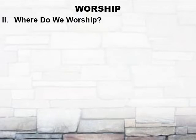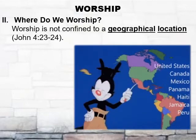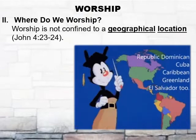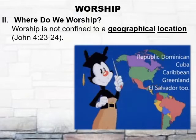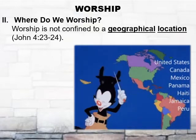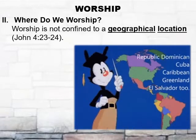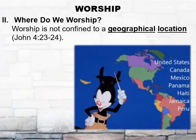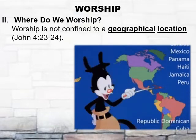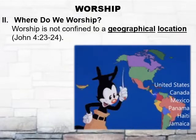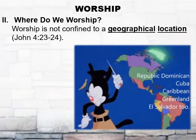Now that we've learned that worship must be reverential, authentic, and scriptural, let's answer the question: where do we worship? Going back to that passage of John chapter 4, the Lord told us that worship is not confined to a geographical location. While debating the Samaritan woman about the proper place to worship, Jesus explained that there will come a time, which is today, when worship will not be done at a certain place, but will be done in spirit and in truth. In spirit pertains to the location, and in truth pertains to proper doctrine. This means that worship can be done any time, any place, and anywhere.